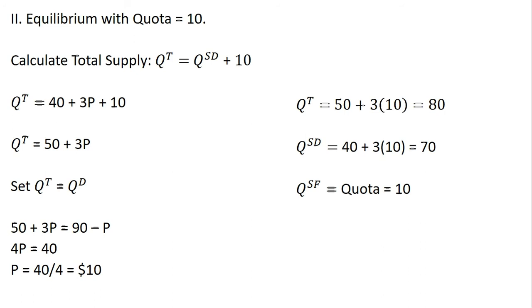Once again, we'll start by calculating the total supply. The total supply will equal the domestic supply plus, in this case, it's actually a little bit simpler. It's just going to be the quota, which we're restricting to be 10 units. So 40 + 3P plus the quota gives us our new total supply equation of 50 + 3P.